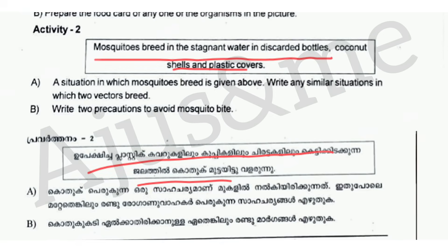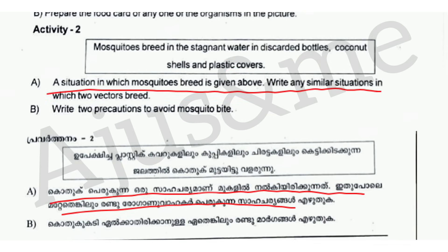Activity 2. Mosquitoes breed in stagnant water in discarded bottles, coconut shells, and plastic covers. A situation in which mosquitoes breed is given above.